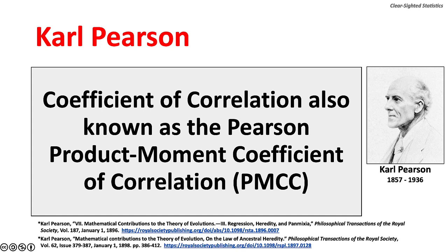The coefficient of correlation is also known as Pearson's Product Moment Coefficient of Correlation, or PMCC. Carl Pearson, Galton's protégé, was chair of the University of London's Department of Eugenics, a chair funded by Galton's estate.